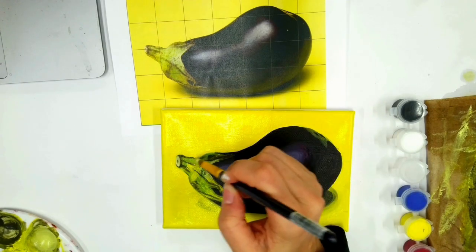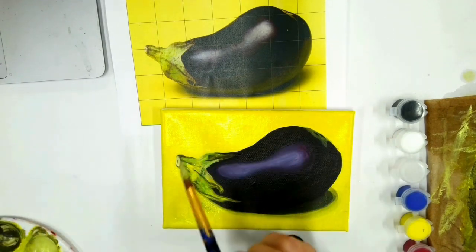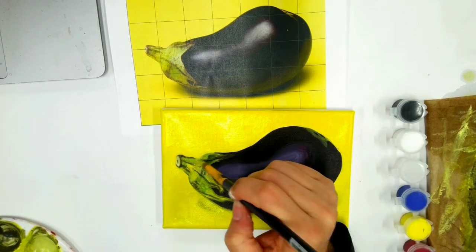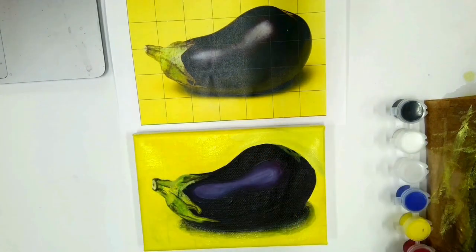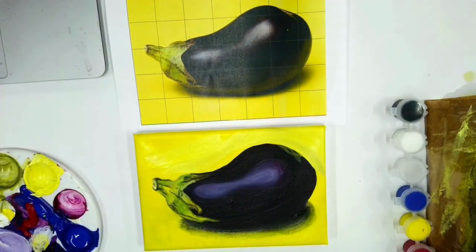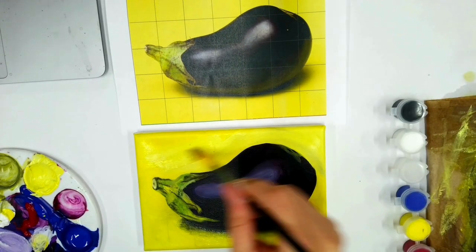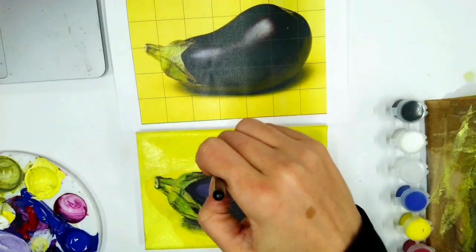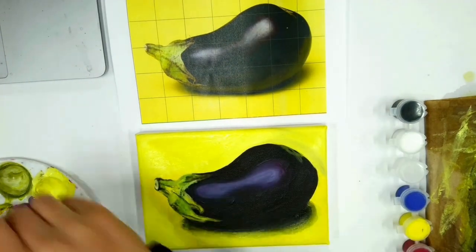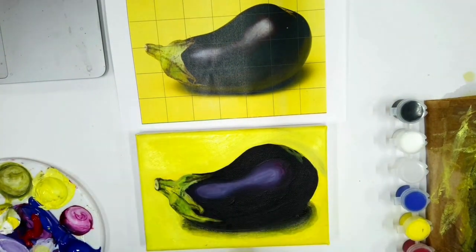Now I'm going in with small details since I feel like the majority of my base layer is looking pretty good. I'm just going in with more of that yellow that's happening on the eggplant. You can see I've added more detail. I'm going back in with that background layer—I really want those lines to disappear in that background, so I needed a bunch of coats for that to happen.